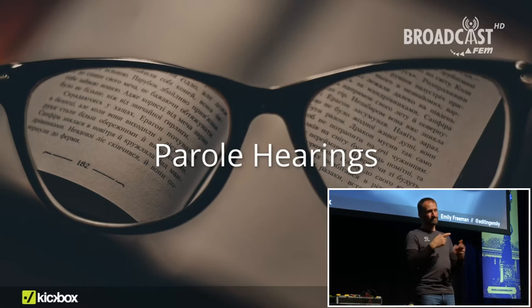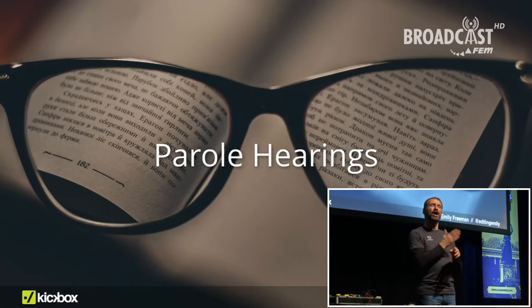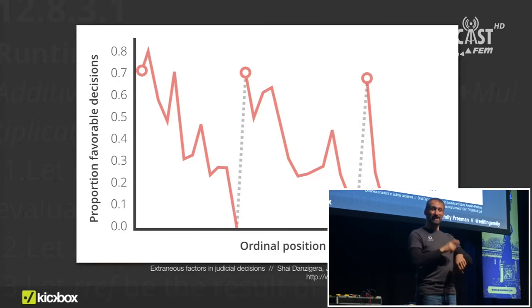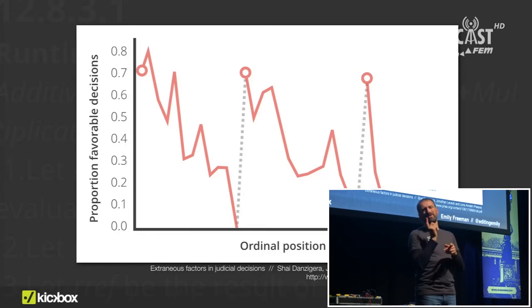Another study by the National Academy of Sciences examined over 1,100 judicial rulings — judges deciding whether a criminal should be released from prison on parole. What influences a judge's decision? Maybe type of crime, remorse, or history of good behavior? The answer was snack time — or more particularly, when the judges went on breaks. The red circles on the graph are the first decision of a session and the gray dotted line is their break. First thing in the morning, a prisoner had a 65% chance of being put on parole. That number nosedived as time went on, eventually dropping to zero — until after the next break, when the likelihood rose to 65% again.